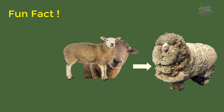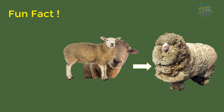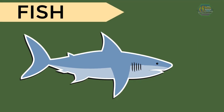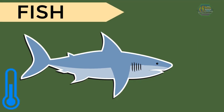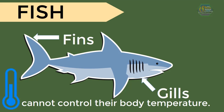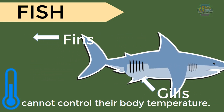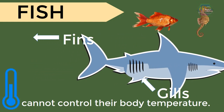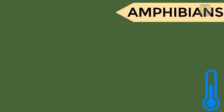Now let's classify vertebrates into five classes. Number one: fishes. They are cold-blooded animals, meaning they cannot control their body temperature. They have gills to breathe underwater and fins for movement. Some examples are goldfish, seahorses, and sharks.